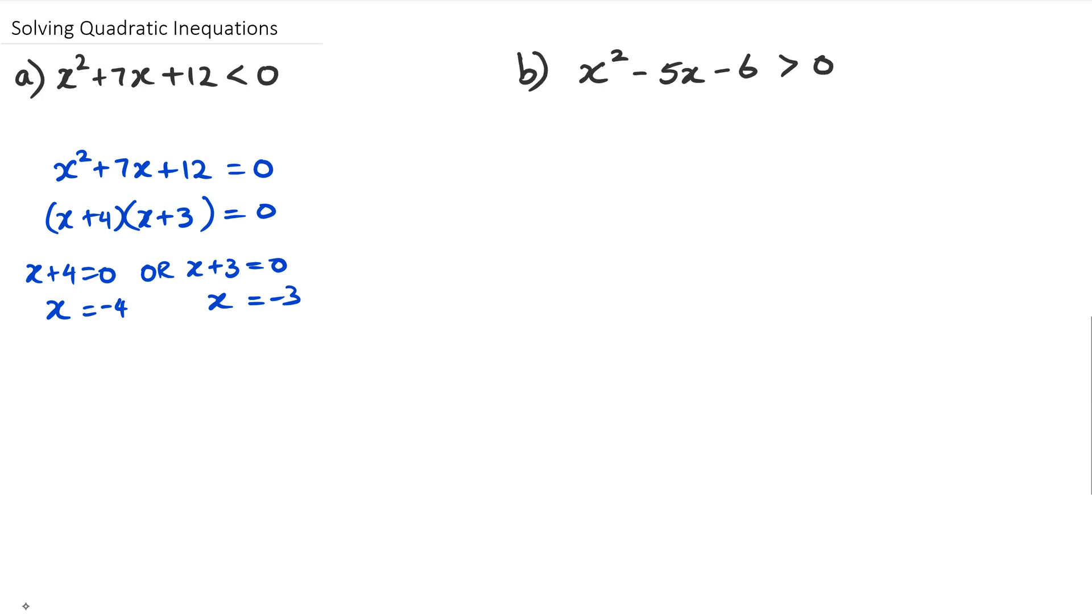Now what I want to do is go back to the original question. The original question actually says when is this quadratic less than zero? Now I'm looking at the coefficient of x squared. Coefficient of x squared is positive. Now because it's positive, I know that this graph is going to look like this because it's a positive parabola.